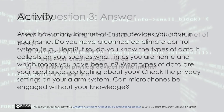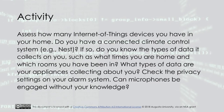The activity for this module asks that you perform an assessment of how many IoT devices you have in your home. Do you have a connected climate control system like Nest? If so, do you know the types of data it collects on you, such as the times you are home or which rooms you've been in? What about other devices or appliances such as refrigerators? What types of data are these devices collecting on you? Make sure to check the privacy settings on your alarm system — can microphones be engaged without your knowledge?